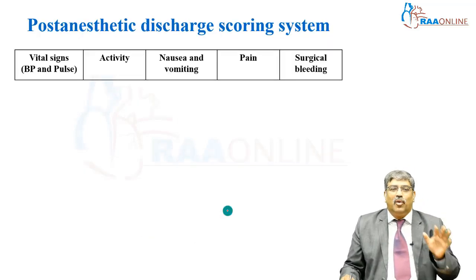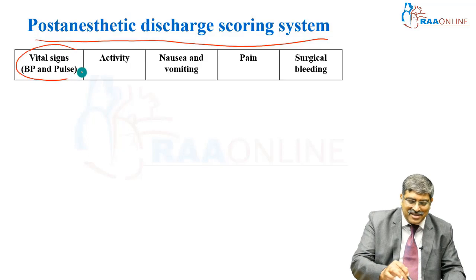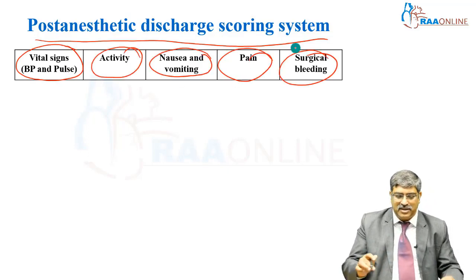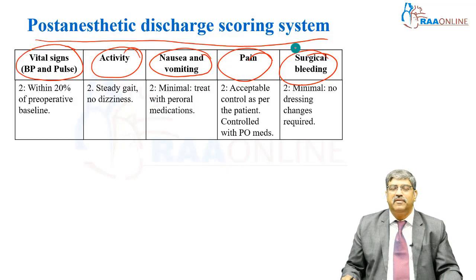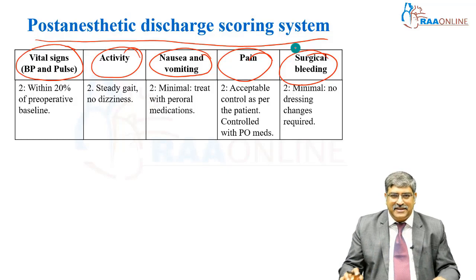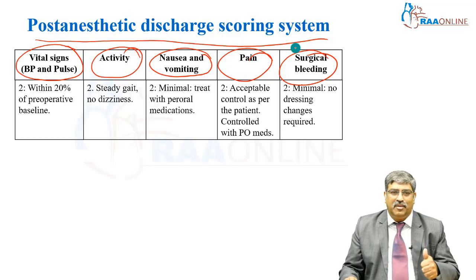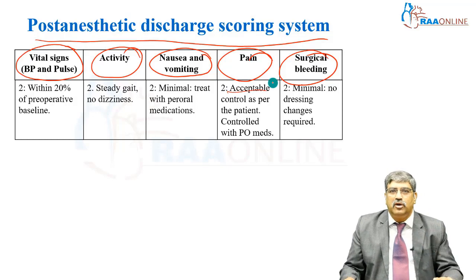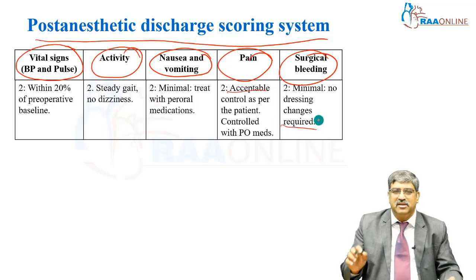The most commonly used post-anesthetic discharge scoring system evaluates vital signs, activity, nausea and vomiting, pain, and surgical bleeding. A score of 2 is given when vital signs are within 20% of the pre-operative baseline, the patient is steady with no dizziness, nausea and vomiting is minimal and treatable with oral medication, pain is acceptable and controllable with oral medication, and surgical bleeding is minimal though a dressing change may be required.